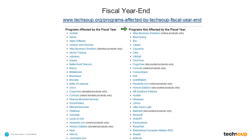All of these other programs — which include things like Box, CauseVox, Citrix, Dell, GrantStation, Microsoft — are not beholden to the fiscal year, which means you may be able to request donations any time of the year. You might be able to request ten times a year for some of these, just depending on the different program requirements.